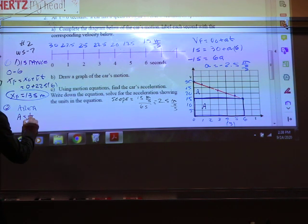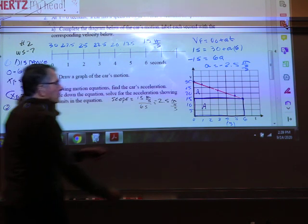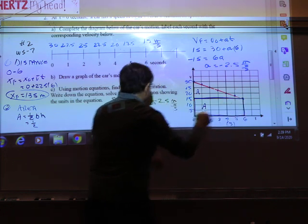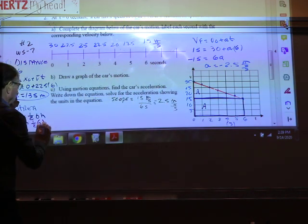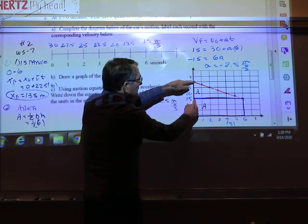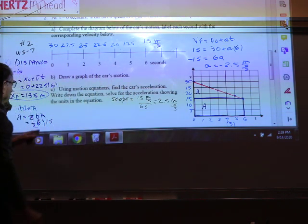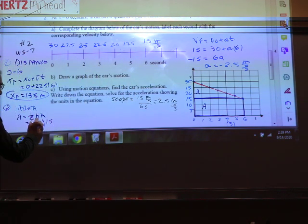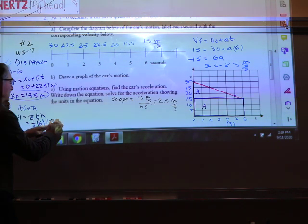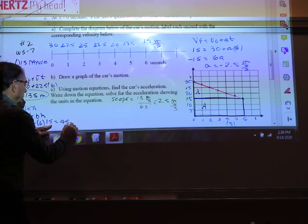Area. Triangle. One half base times height. One half. The base is six. The height is 15. Half of six is three. Three times 15. That's 45 meters.